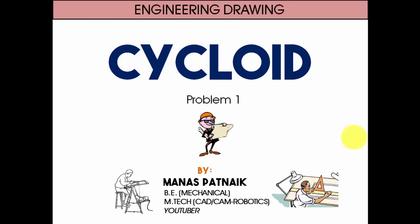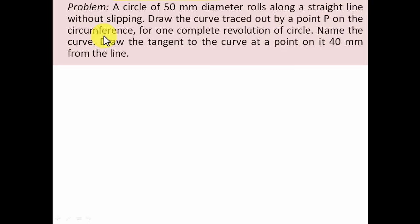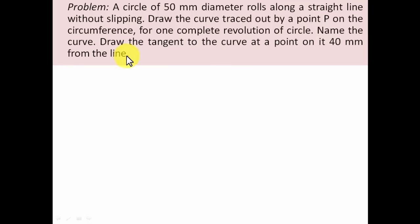Now let's get started with problem number one. A circle of 50 mm diameter rolls along a straight line without slipping. Draw the curve traced out by a point P on the circumference for one complete revolution of the circle, name the curve, and draw the tangent to the curve at a point on it 40 mm from the baseline. The description looks a bit confusing but we're going to sort it out.